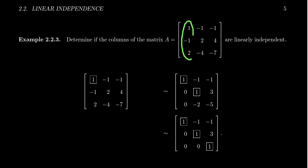So we're thinking of here's my first vector A1, which is 1, negative 1, 2. Here's my second vector A2, which is negative 1, 2, negative 4. And here's my third vector, call it A3: negative 1, 4, negative 7. Are these three vectors linearly independent?